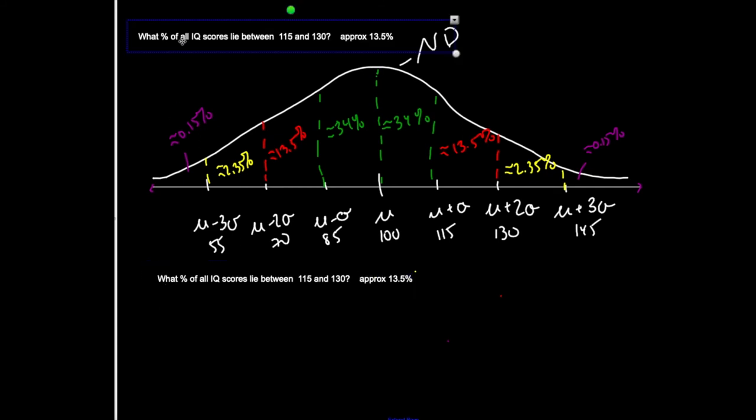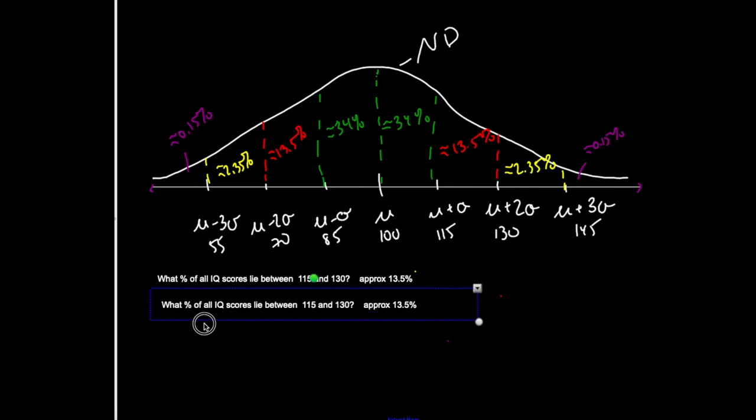So I want you guys to realize I can get really, really detailed. What percent of all IQ scores lie between 70 and 115? So 70 is two standard deviations below the mean, but 115 is one standard deviation above the mean. So that implies that I need to use this detailed kind of situation here.